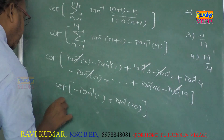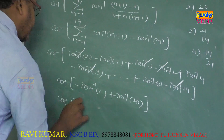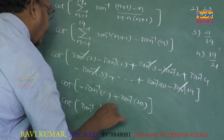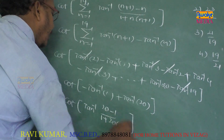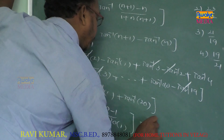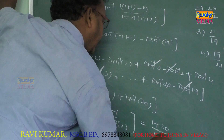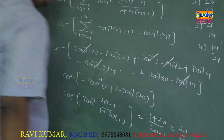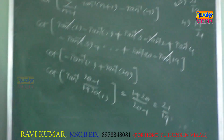Using tan⁻¹x minus tan⁻¹y equals tan⁻¹((x - y)/(1 + xy)), we get the result as tan⁻¹(21/19), which simplifies to the third option as the answer.